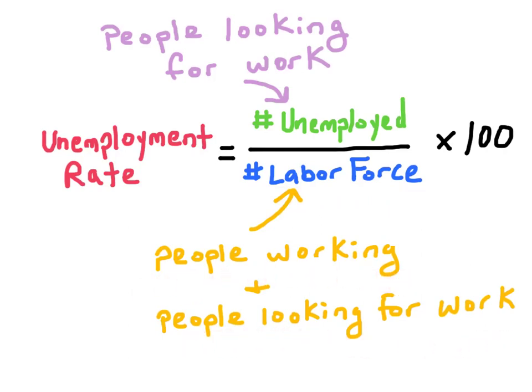Remember, to be considered unemployed, someone must be looking for work. So a discouraged worker — a person that has given up finding employment — is not accounted for in the unemployment rate.